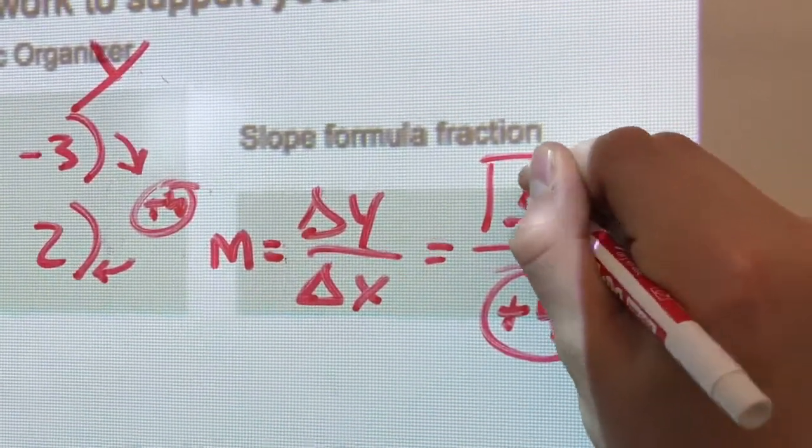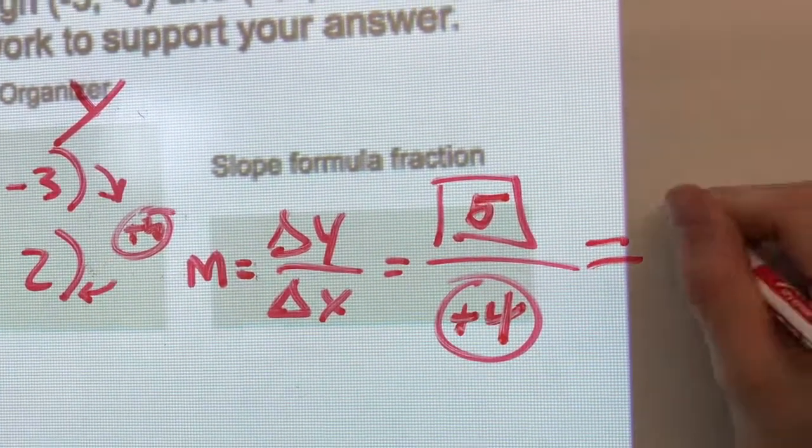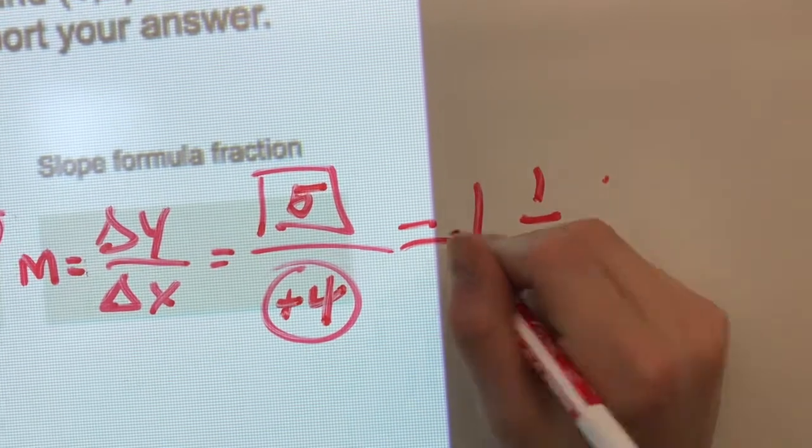That's your change in y. All right, so where does that go in the slope fraction? Right here. All right, so what's your slope? 1 and 1/4. Is that positive or negative? Positive.